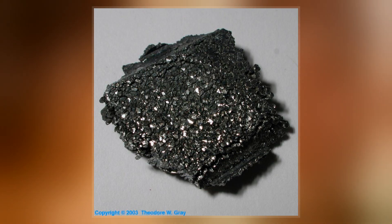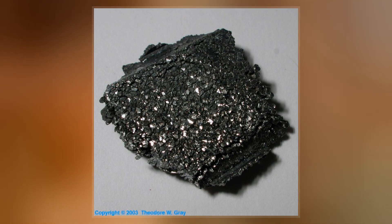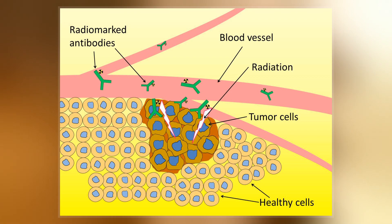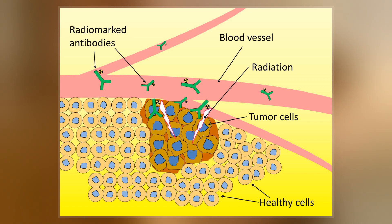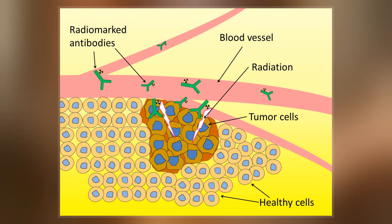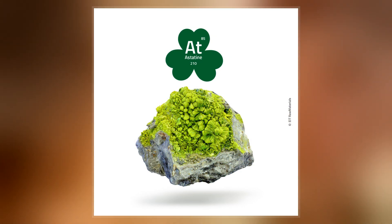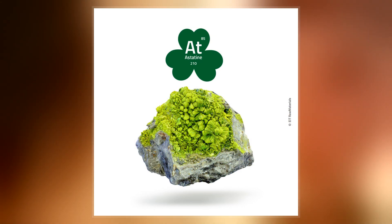All of astatine's isotopes are short-lived. The most stable is astatine-210, with a half-life of 8.1 hours. A sample of the pure element has never been assembled because any macroscopic specimen would be immediately vaporized by the heat of its own radioactivity.